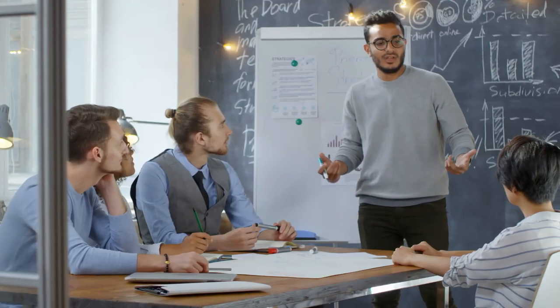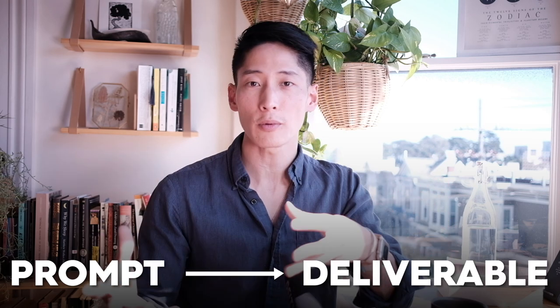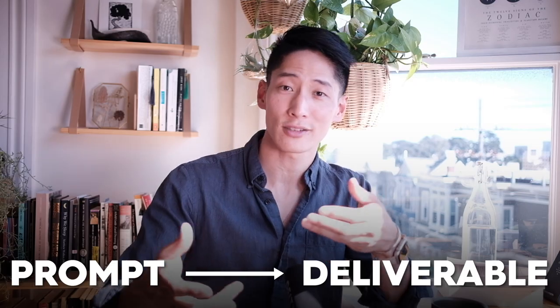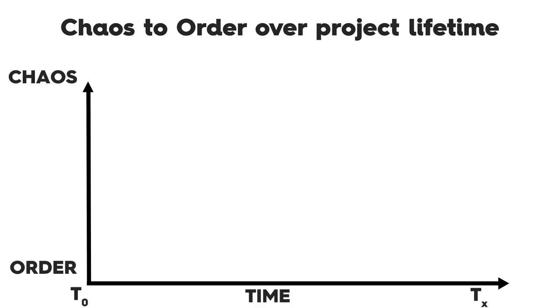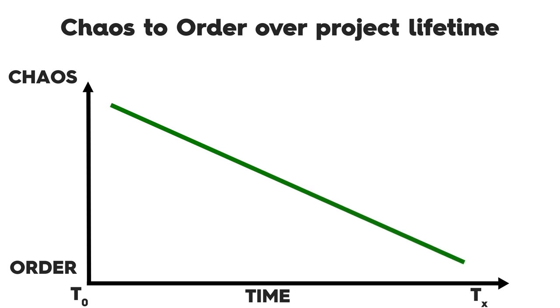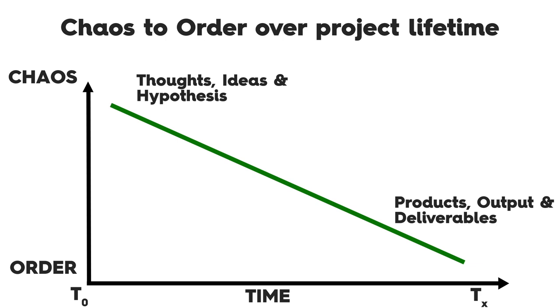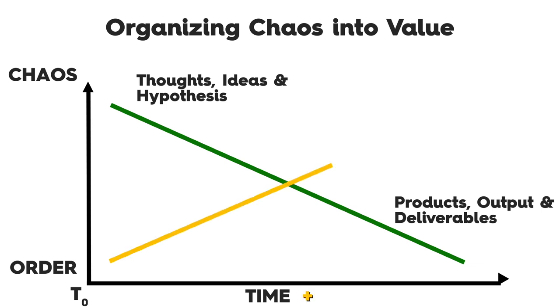If you're making a presentation for work or for school, you're starting with a prompt or understanding your audience. And then the end is the deliverable itself — a PowerPoint deck that you then present to your audience. In this way, the lifetime of a project goes from chaos to order over time. On the chaos side, we have thoughts, ideas, and hypotheses or prompts. And on the order side, we have products, output, deliverables — whatever it is that you want to show to the world. Our job is to put in the work to bring chaos into order states.